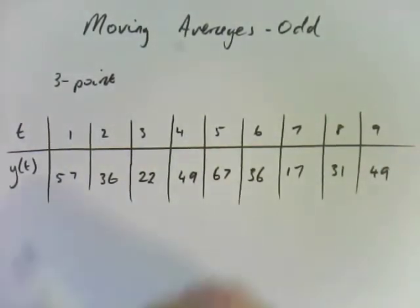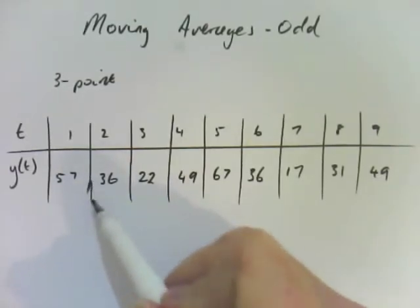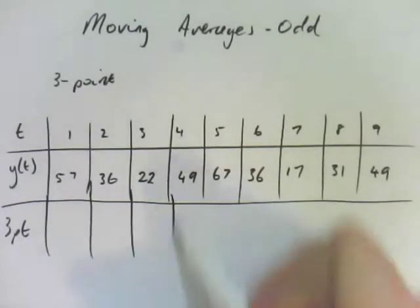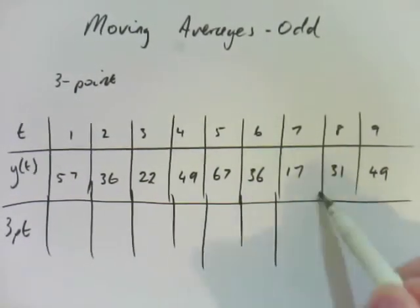To do this, what I do is I would draw another line underneath my table, and we'll just call it three-point, and I'll drop all of those down. Like so.